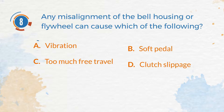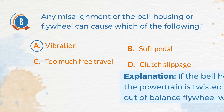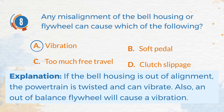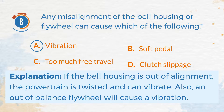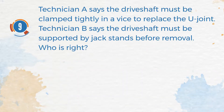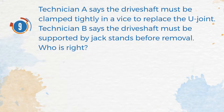The correct answer is A: Vibration. Explanation: If the bell housing is out of alignment, the powertrain is twisted and can vibrate. Also, an out-of-balance flywheel will cause a vibration. Number 9. Technician A says the driveshaft must be clamped tightly in a vise to replace the U-joint. Technician B says the driveshaft must be supported by jack stands before removal.